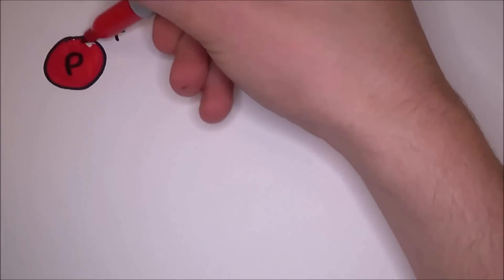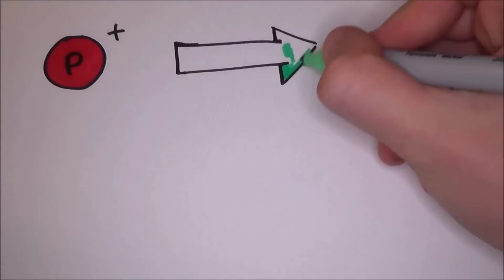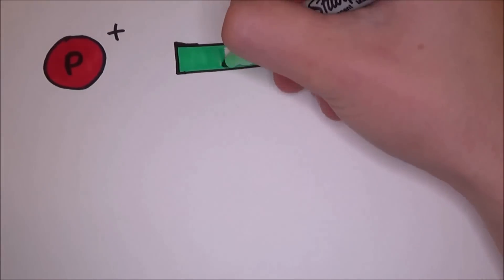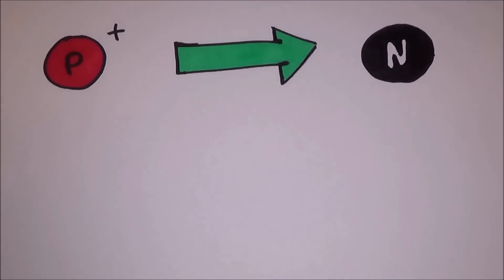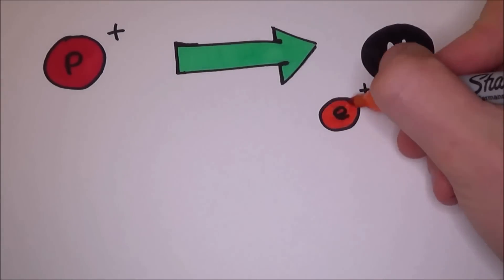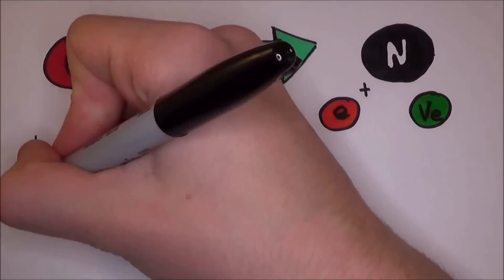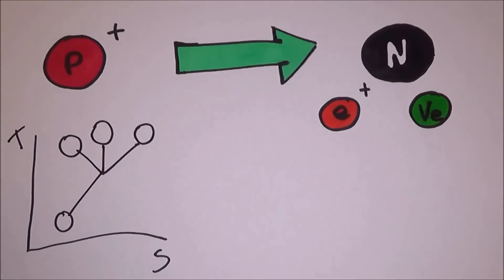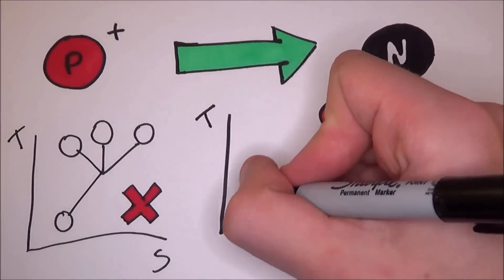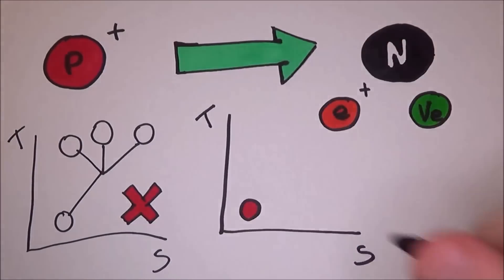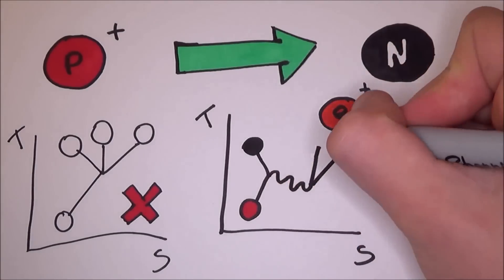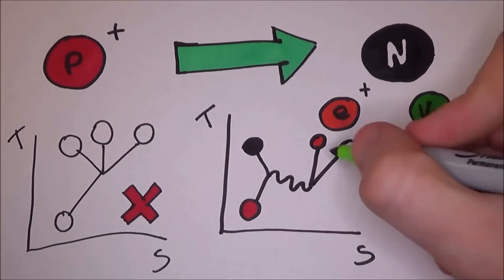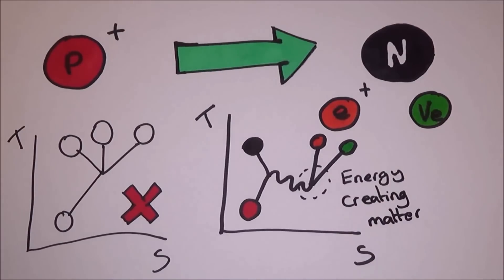We need to know this because it helps us describe what happens when a proton becomes a neutron. The proton will turn into a neutron, a positron — which is the antimatter version of an electron — and a neutrino. What really happens is that the proton comes in and splits into a neutron, and a W-plus boson comes out, which then quickly decays into a positron and a neutrino. This is energy creating matter right here.